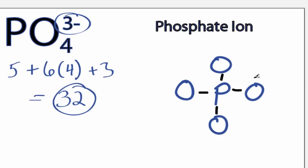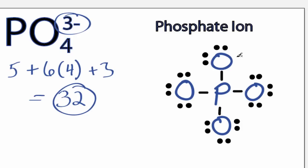And then let's fill the octets for the Oxygen. So we've used all 32 of the valence electrons, each of the atoms has an octet, and it really feels like we're done with this one.